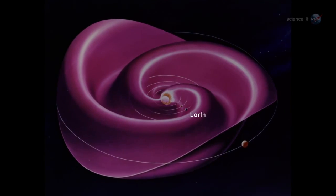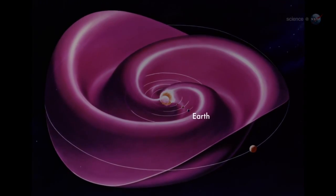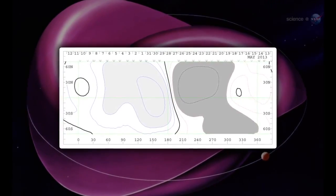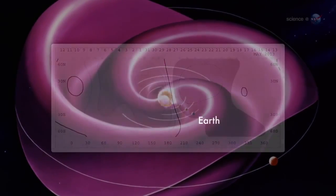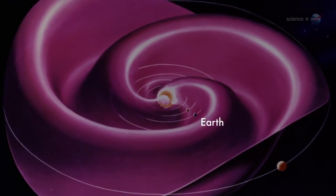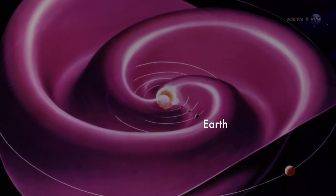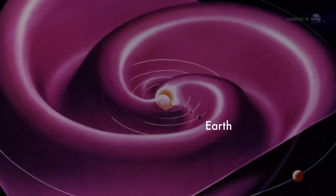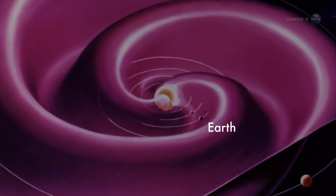During field reversals, the current sheet becomes very wavy. Shearer likens the undulations to the seams on a baseball. As Earth orbits the Sun, we dip in and out of the current sheet. Transitions from one side to another can stir up stormy space weather around our planet.